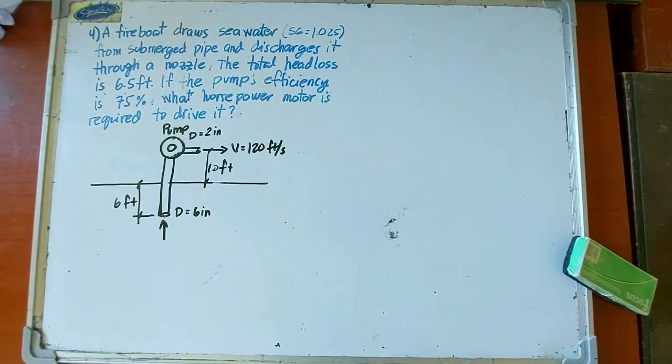We're going to apply the energy equation, Bernoulli's energy equation with a pump. So what are we going to do? We choose two points. When we apply the energy equation, we always need two points. In designating those two points, we need to consider that it should eliminate the number of unknowns in the equation. Another thing to consider is the direction of flow.